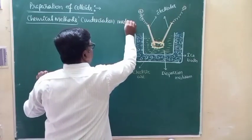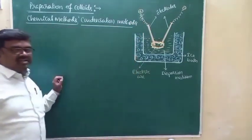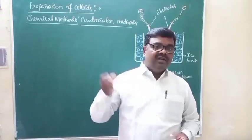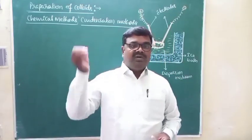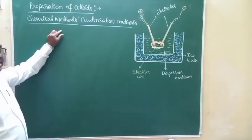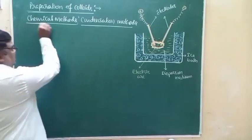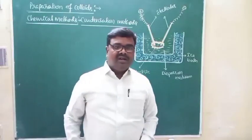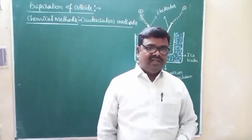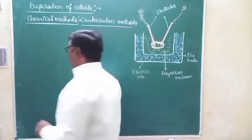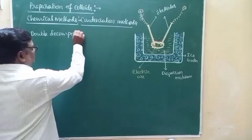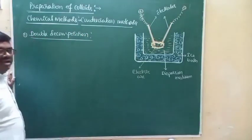In chemical methods, we make use of chemical reactions for the preparation of colloids. These chemical reactions lead to formation of molecules which undergo aggregation under suitable conditions to form colloidal solutions. Chemical reactions used include double decomposition, oxidation, reduction, and hydrolysis.